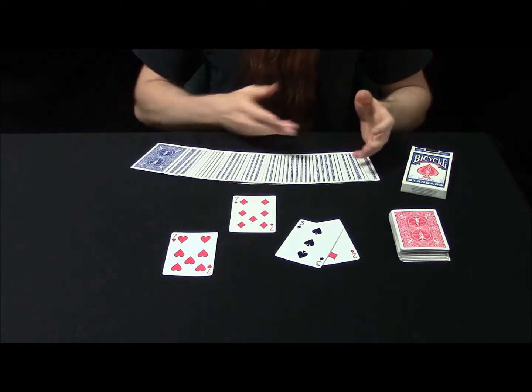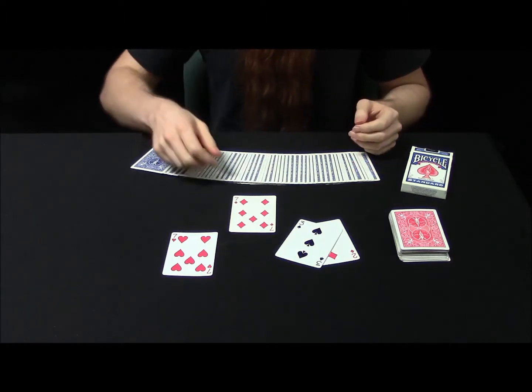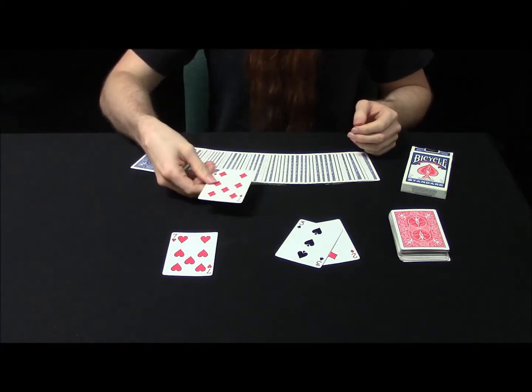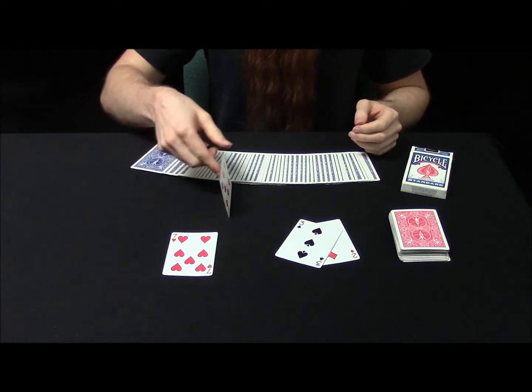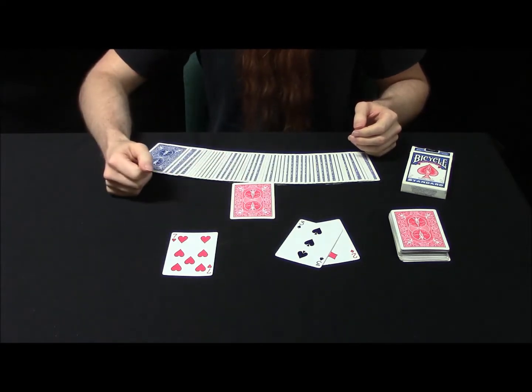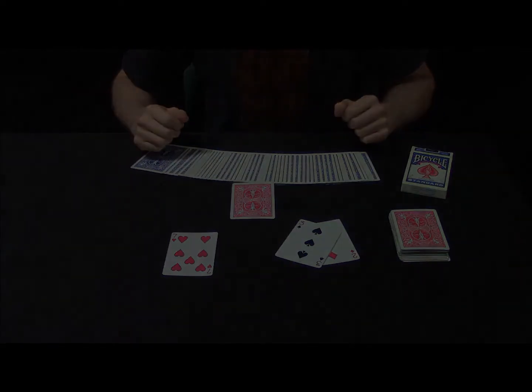Now, I think the most remarkable thing is that out of this entire blue deck, the seven of diamonds is the only red card. And that is Long Lost Mates.